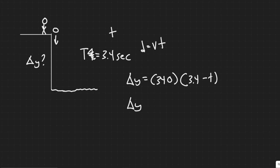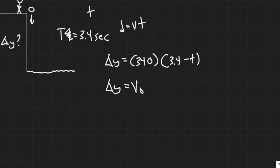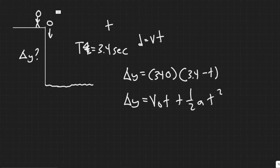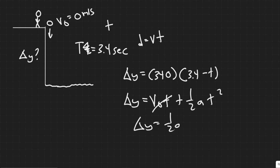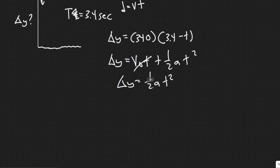Now we want delta y in terms of the rock falling down. We use the kinematic formula: delta y equals v-sub-0 times t plus one-half a t squared. Since the rock starts from rest, v-sub-0 is zero, so this simplifies to delta y equals one-half a t squared. Here t is just the time for it to fall, so it works directly.